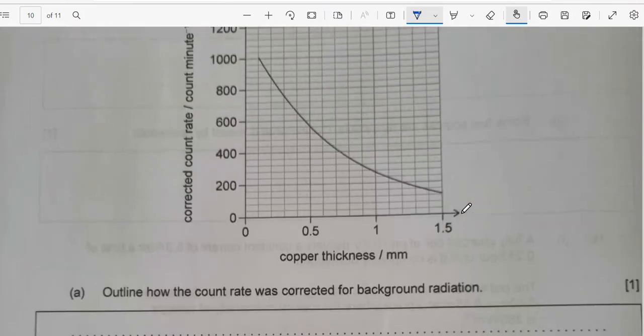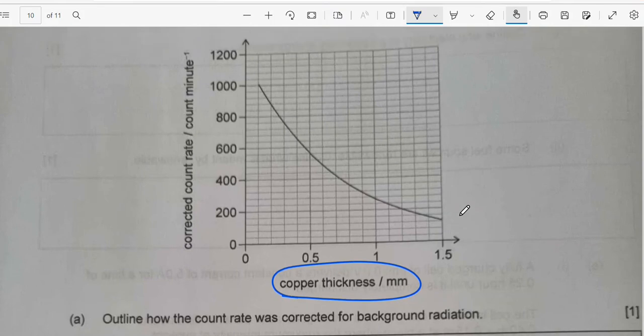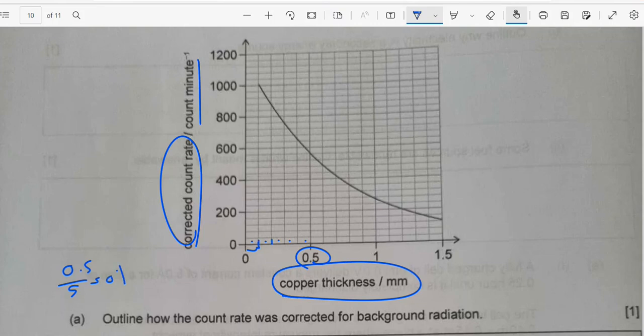Here, I have a relationship between copper thickness and in the y-axis, I have the corrected count rates in count per minute. Here, each square will represent 0.1 because I have 1, 2, 3, 4, 5 squares. So 0.5 divided by 5 to give me 0.1. So each square will give me 0.1. So here we have 0.1, 0.2. Here will be 0.25.